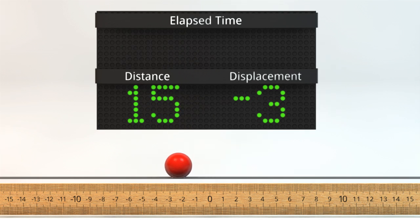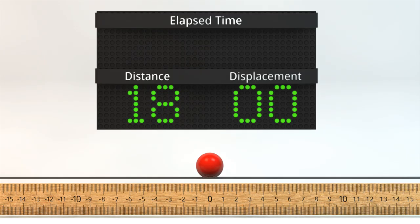So we can see that the distance tells us how far we have traveled, but gives us no information on where the ball is at any time. While displacement tells us where the ball is, but on its own doesn't tell us much about how far the ball has really traveled in the past.